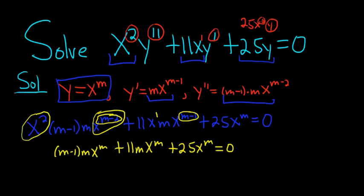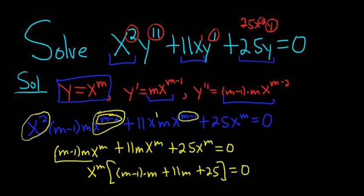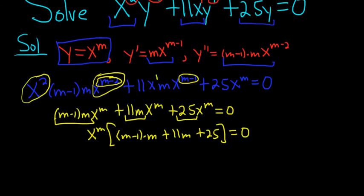Now we can factor out an x to the m. That leaves us with m minus 1 times m plus 11m plus 25. And that's all equal to 0. So we have m minus 1 times m plus 11m plus 25. The next step, we can divide by x to the m. So when we do that, it goes away.